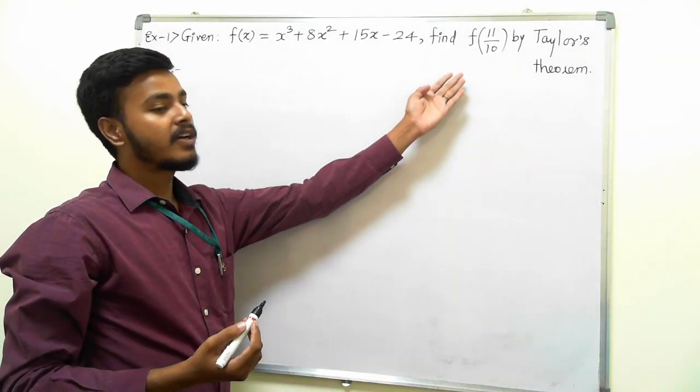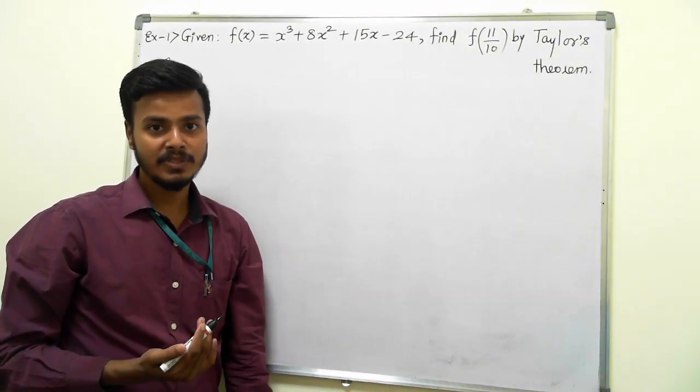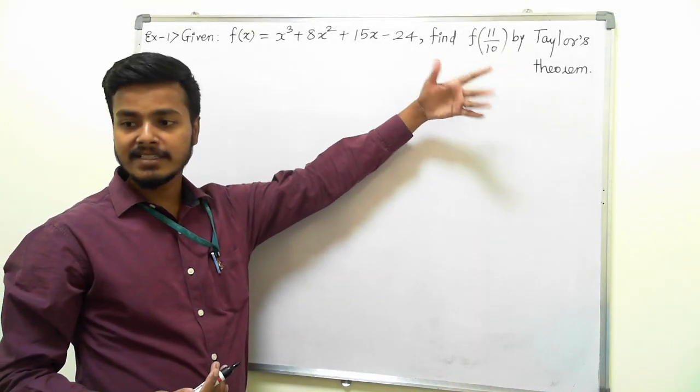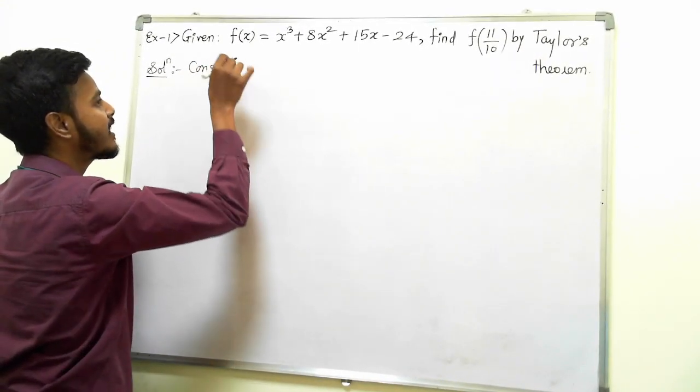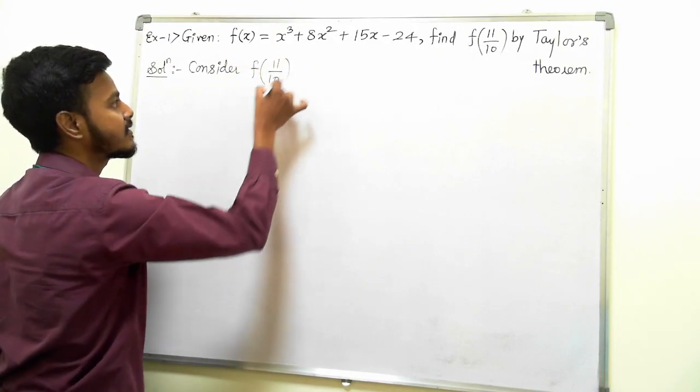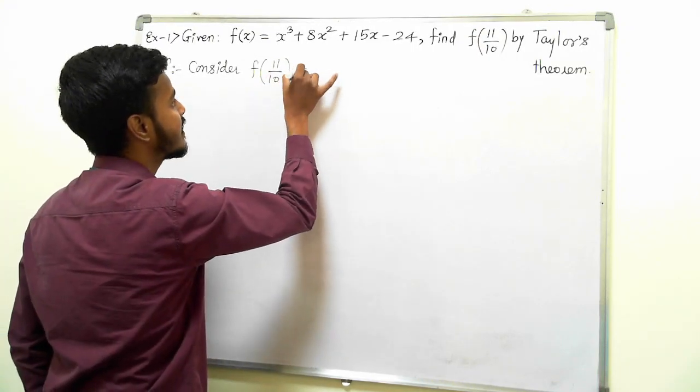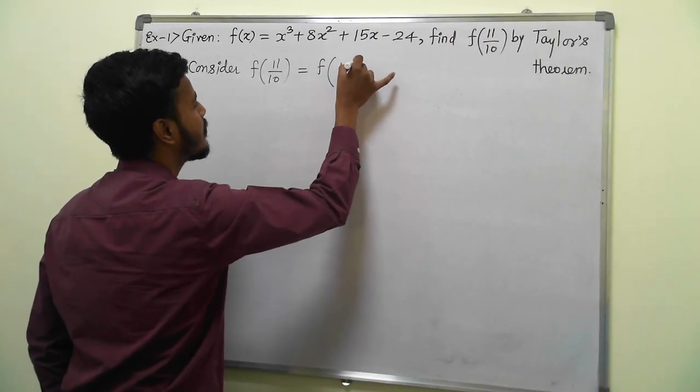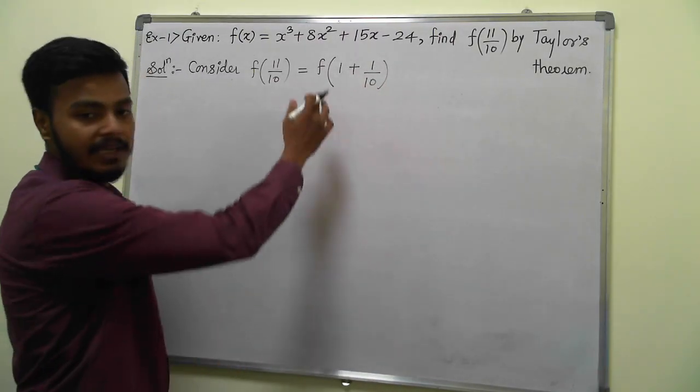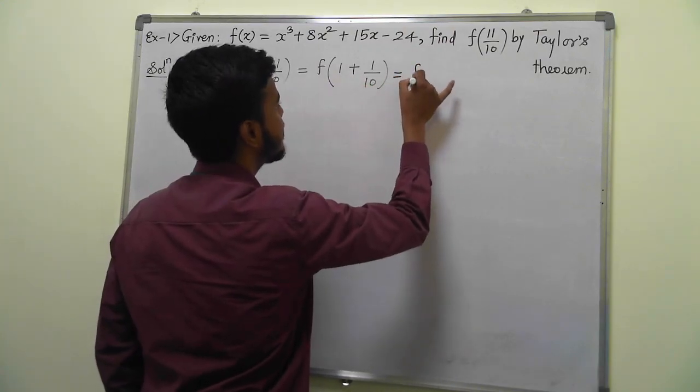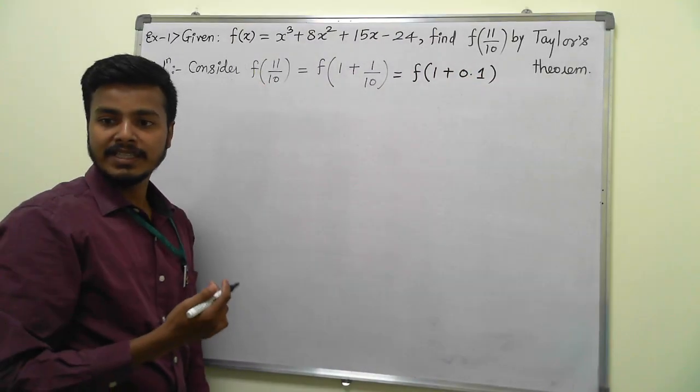If you're not able to approach this problem, think about what you can do. At most, you can write f(11/10) in another way. Consider this: f(11/10) can be written as f(1 + 1/10), which equals f(1 + 0.1). Now we can correlate this with Taylor series.